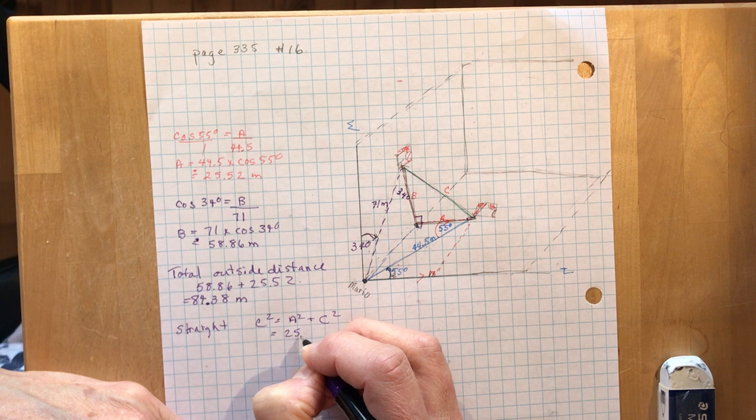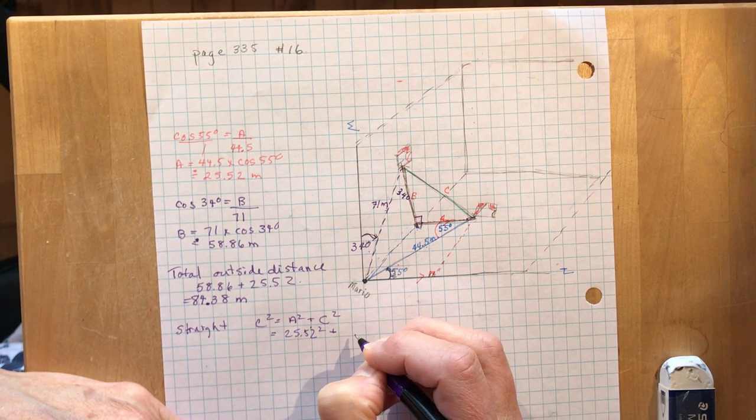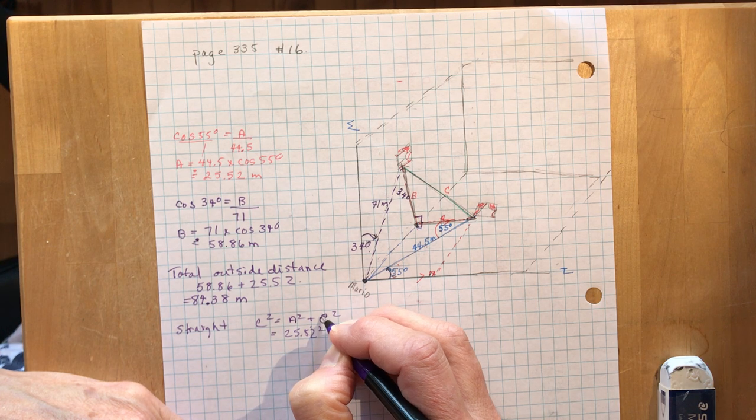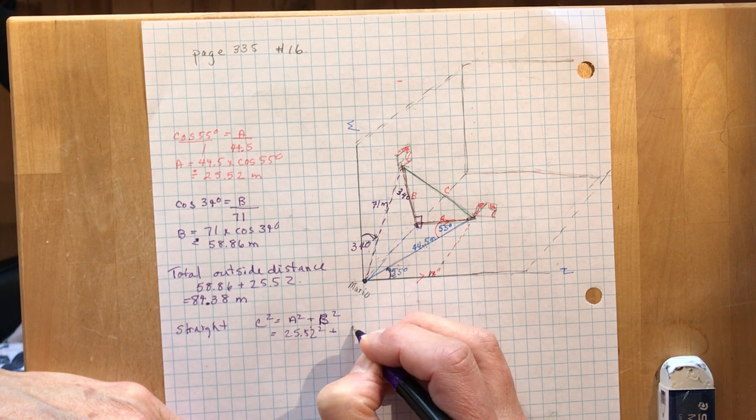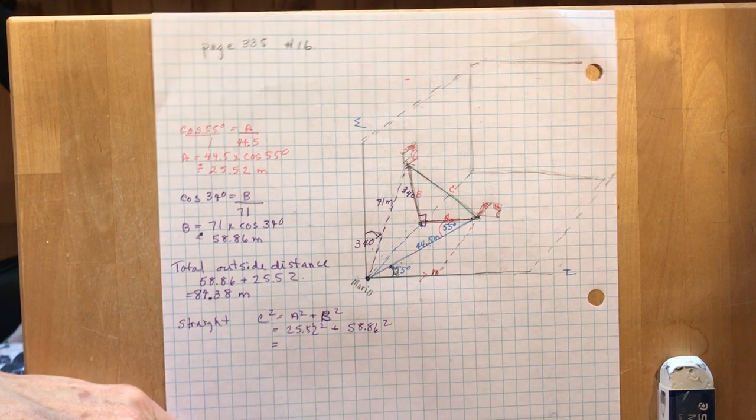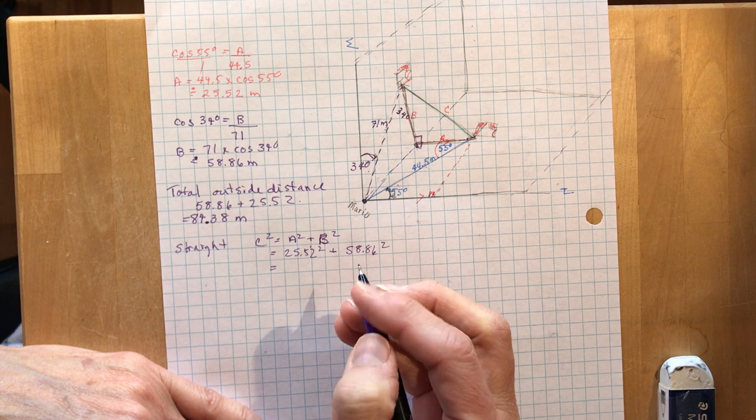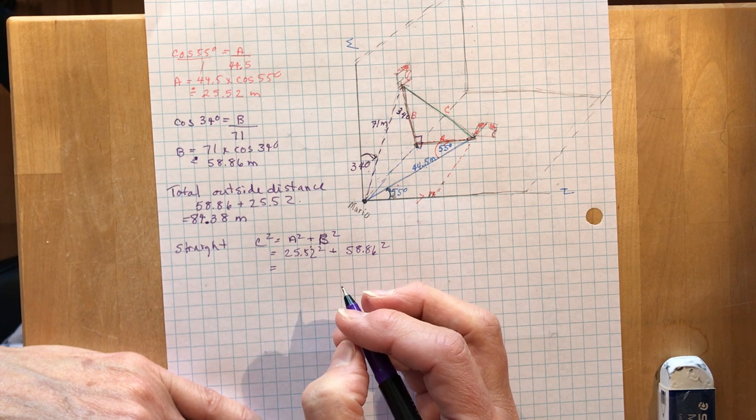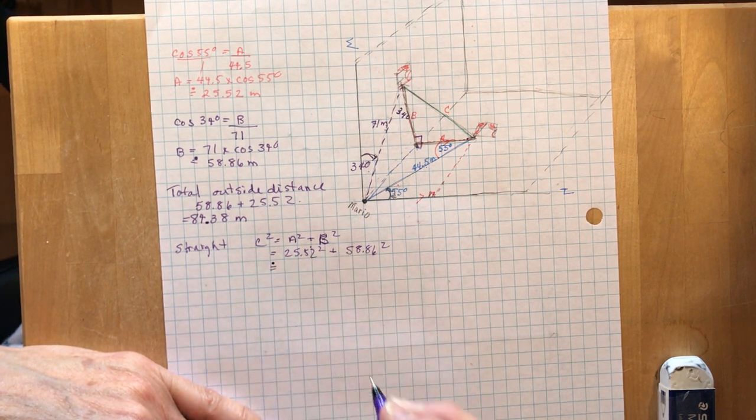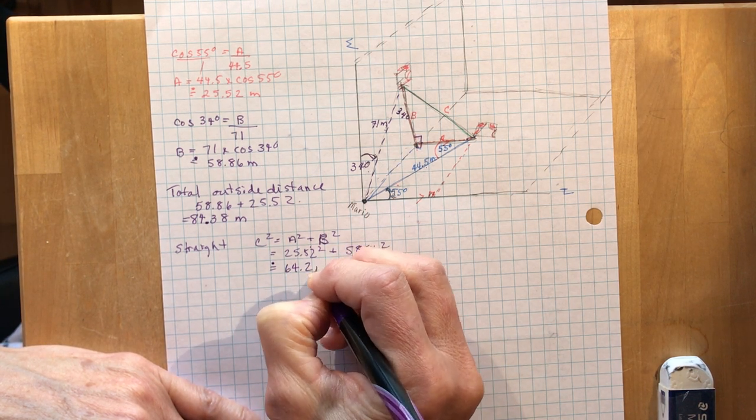So A was 25.52, I'm going to square it, I'm going to add, oops I said C, that should have been a B, 58.86, and I'm going to square it. So you square those two and add them together and take the square root. I'm not going to do all that for you. You've got a calculator and it should come up to about 64.2 meters.